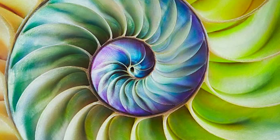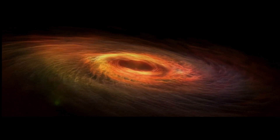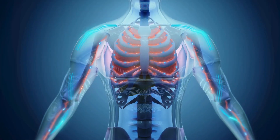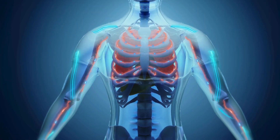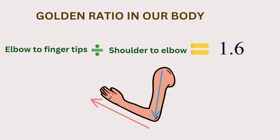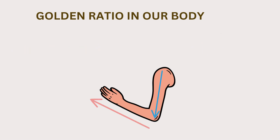Now draw an arc to connect the diagonals of all the squares from smallest to largest. The resulting shape will be a close approximation of a golden spiral. You can see this spiral many places in nature. Our very bodies follow the golden ratio — if you measure from your elbow to your fingertips and divide that by the distance from your shoulder to your elbow, you'll get approximately 1.6, the golden ratio.